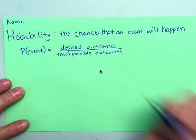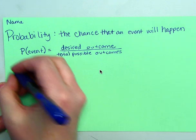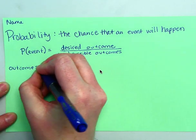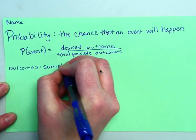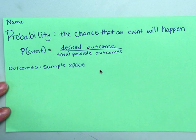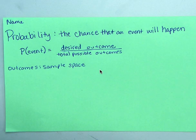So total possible outcomes. Okay, and outcomes is also called sample space. So we're going to write that outcomes is the same as our sample space. So in our sample, what are all the outcomes listed together? That's also called the sample space.